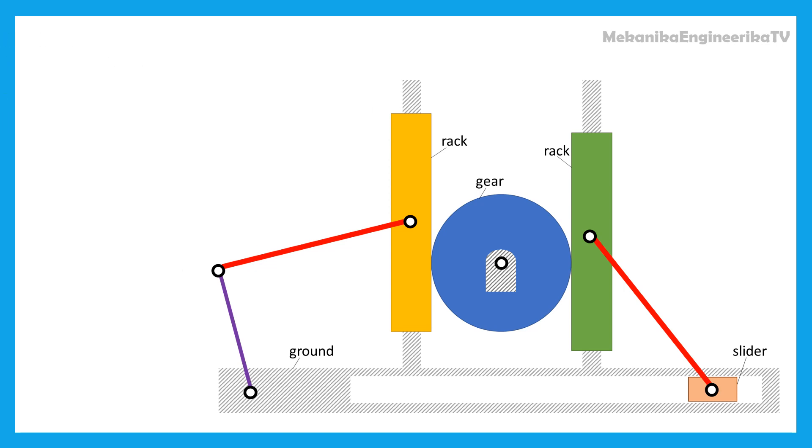The mechanism is built up from 8 links: the ground, a central gear, 2 racks, 3 bars, and 1 slider.